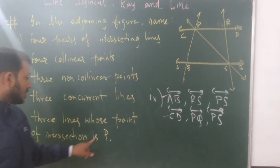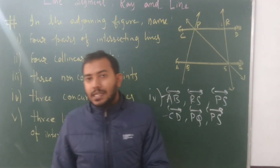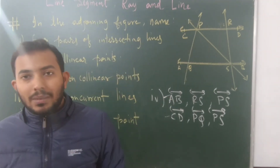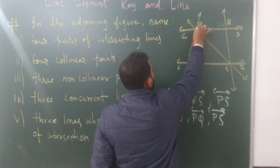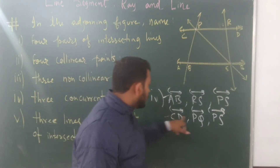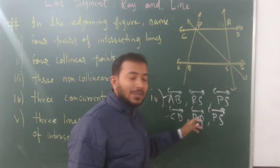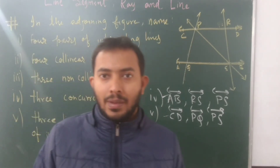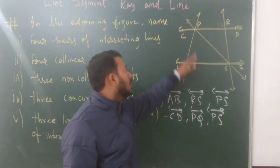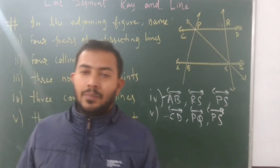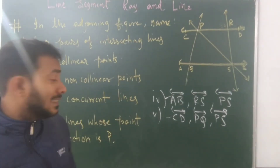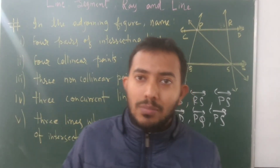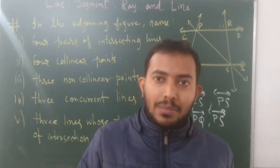The last one is three lines passing through point P — lines that have P as a common point. You can see here that P is the point where three lines meet. So the answer for part five is the three lines that pass through point P. This is the point of intersection. I hope you understood. Thank you.